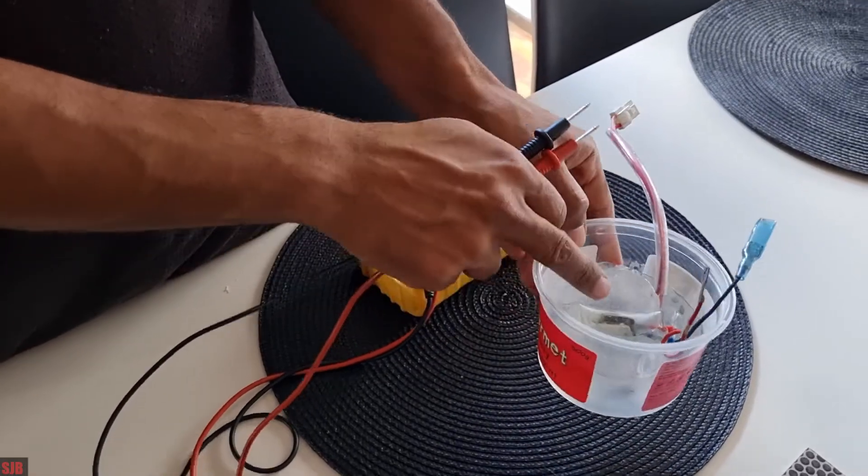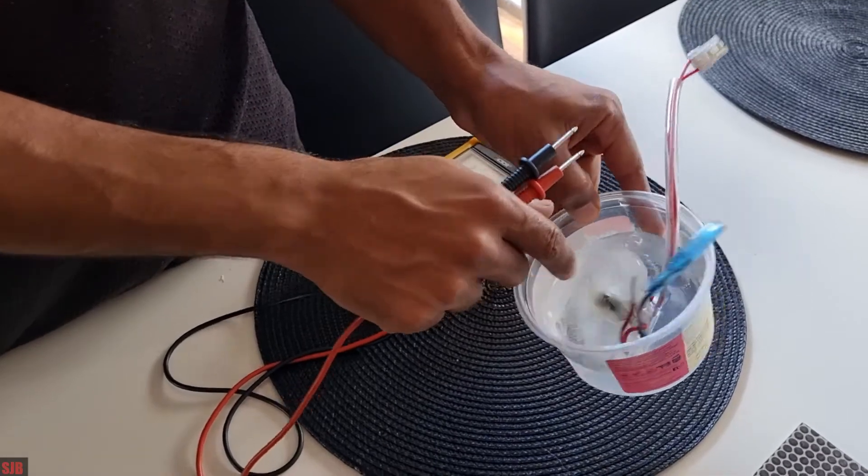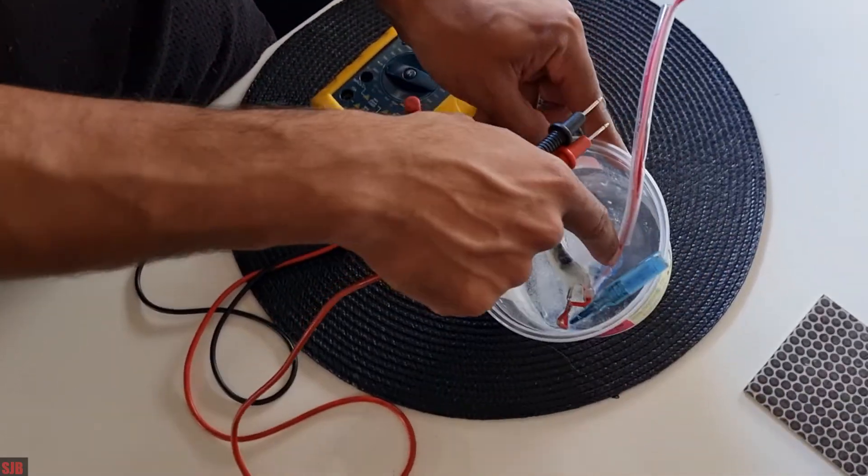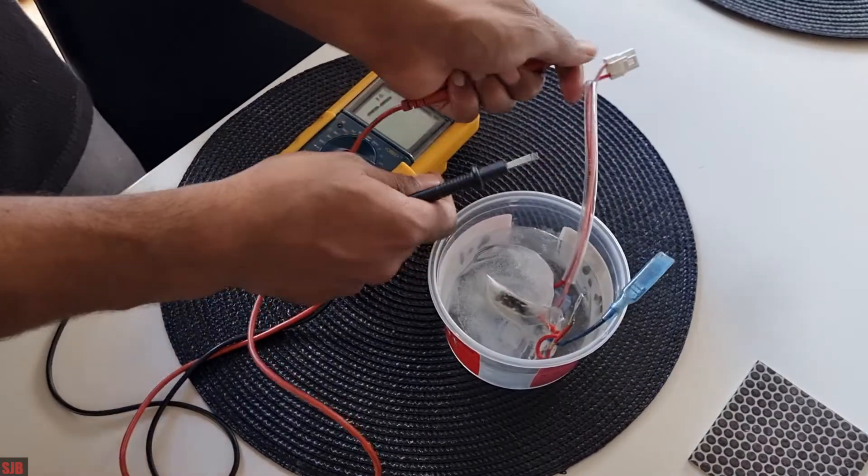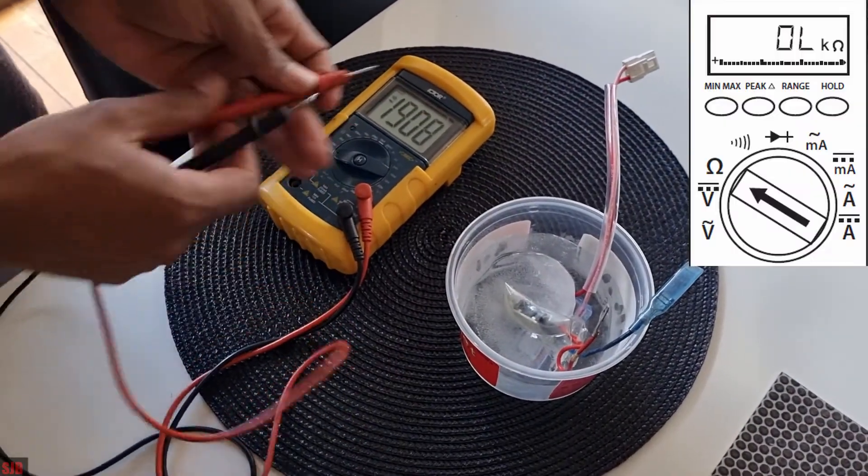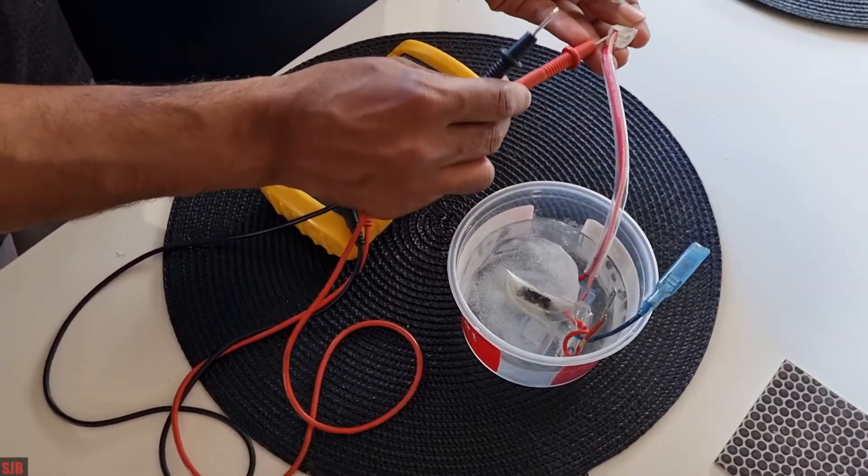So here we have a defrost thermostat off a fridge. Here's the old one and the new one is below it. So I'm testing both. I put it on continuity on the multimeter so it beeps. So this is the new one.